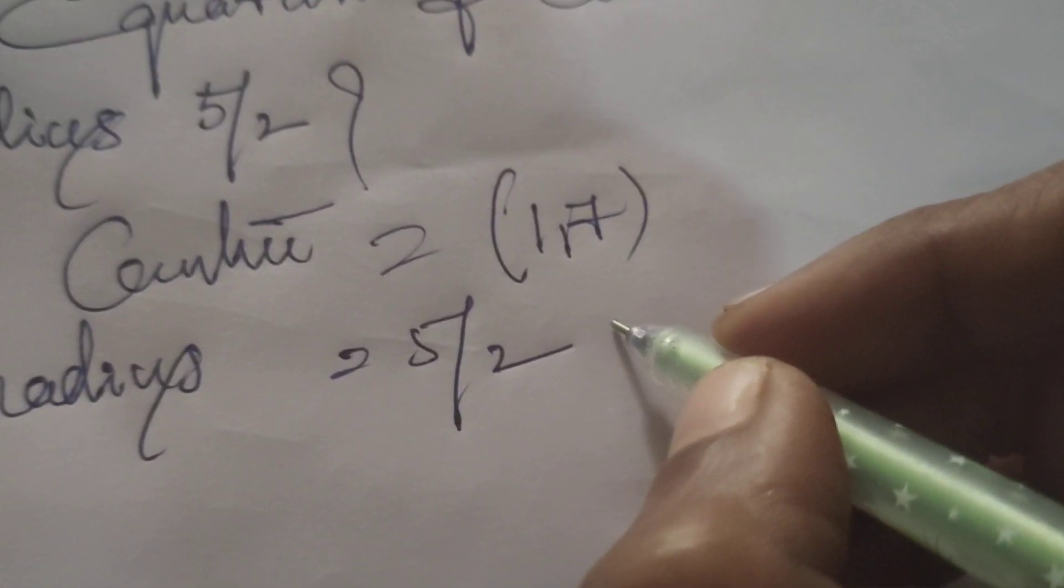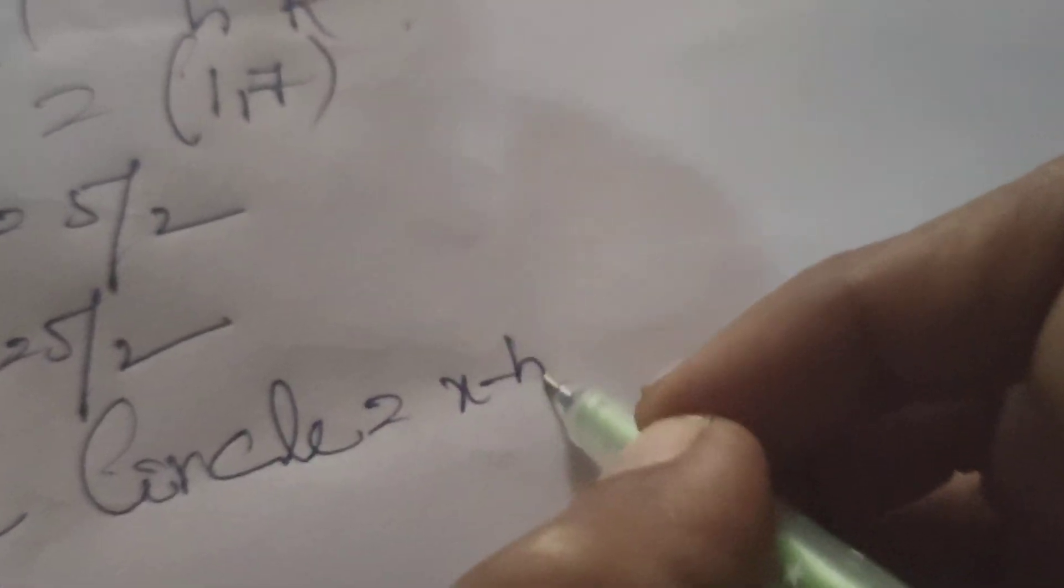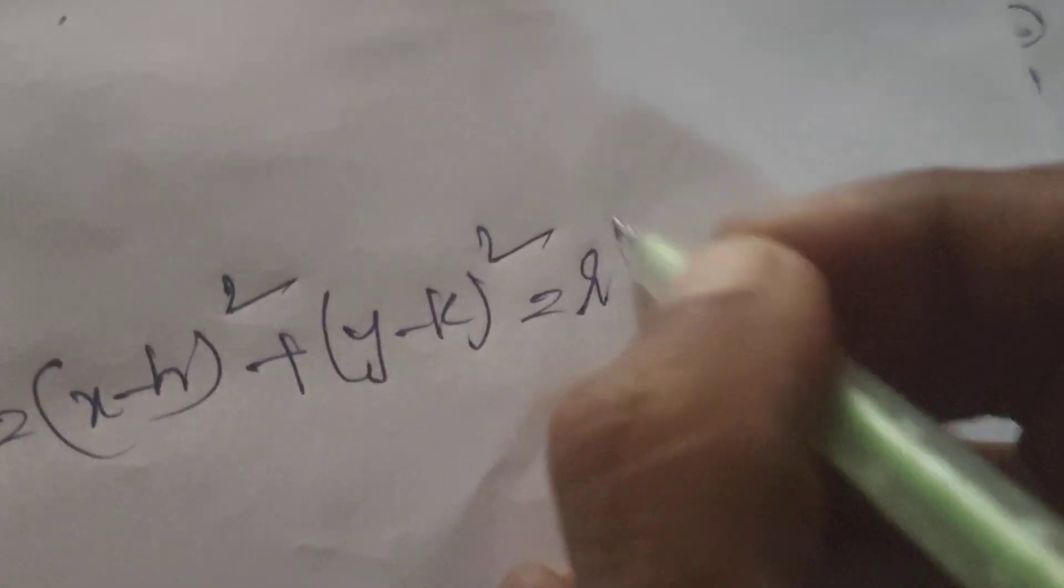Here radius, consider that r equals to 5/2 and given center (h,k). Now find out the equation of the circle. Equation of circle formula: (x-h)² + (y-k)² = r².